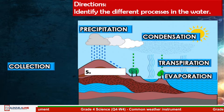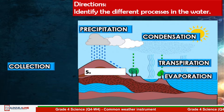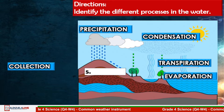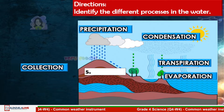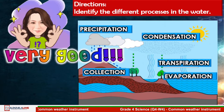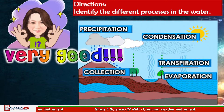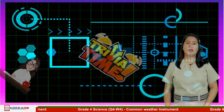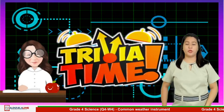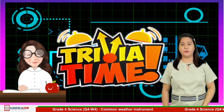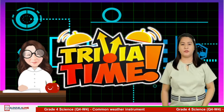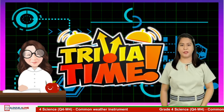Number five: This is when water that falls from the clouds as rain, snow, hail, or sleet collects in the oceans, rivers, lakes, and streams. Very good! The answer is Collection. Thank you for your quick responses — it only proves that you really learned from the previous lesson. Keep it up!